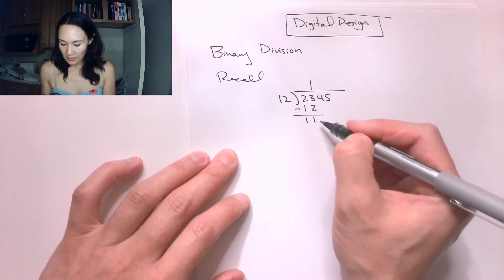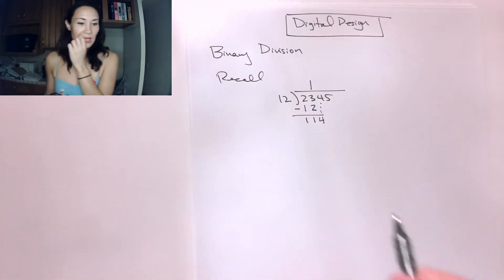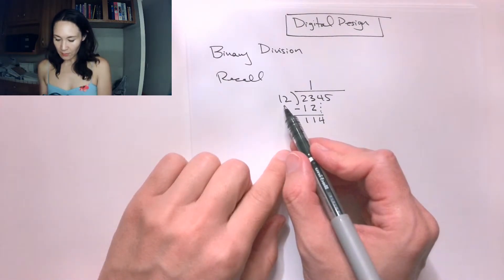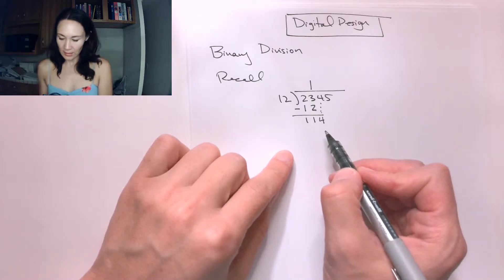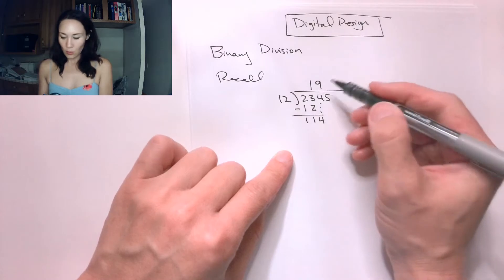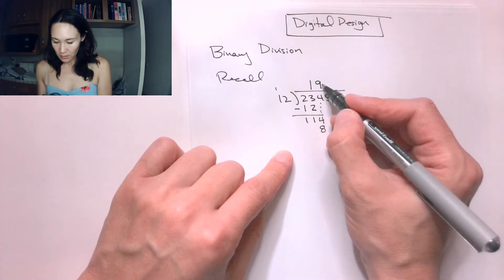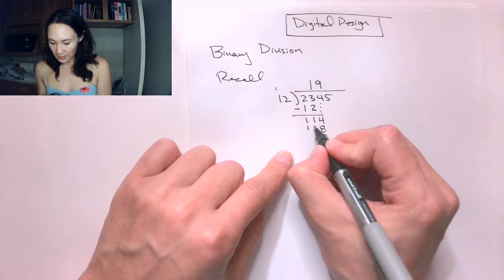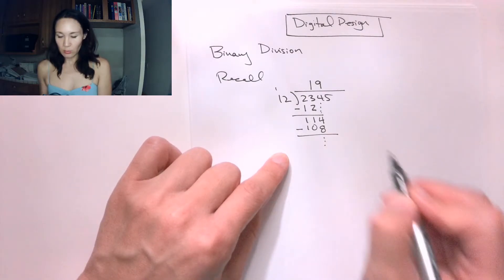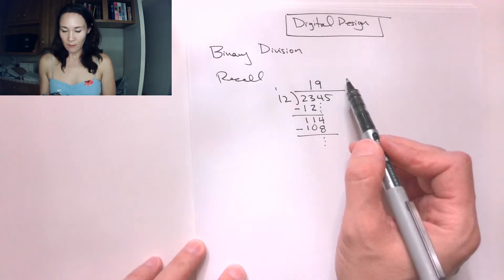At this point, we drop down the 4 and the process repeats. We ask ourselves how many times does 12 go into 114. The answer is 9, so we put a 9 above the 4. We multiply 9 by 2 and we get 18, carry the 1. 9 times 1 plus 1 gives us 10. We change the sign, we add straight down, and this process repeats and so on until we get our answer.